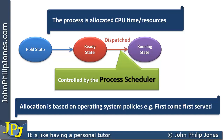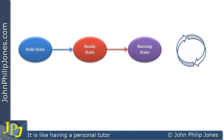The running state actually means we're fetching, decoding, and executing the machine code of the process, as represented by rotating arrows. While in the running state, it's feasible that the actual process could complete — represented by stationary arrows — meaning we are no longer fetching and decoding the machine code associated with that particular process.